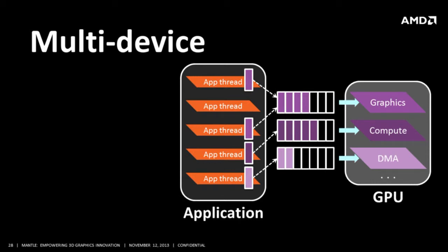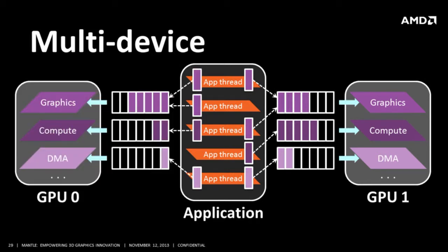With Mantle, multi-device is really an extension of the native execution model. Your application generates command buffers and submits them to different queues for GPU execution. In a multi-device configuration with multiple Mantle devices, it's an extension of the single GPU model — you still build all the command buffers, you see all the individual GPU engines, control all the queues, and synchronize among them. With synchronization it looks like an extension of a single GPU model, scaled up to support multiple devices, allowing you to scale easily across multiple GPUs without fundamentally changing how your application works.